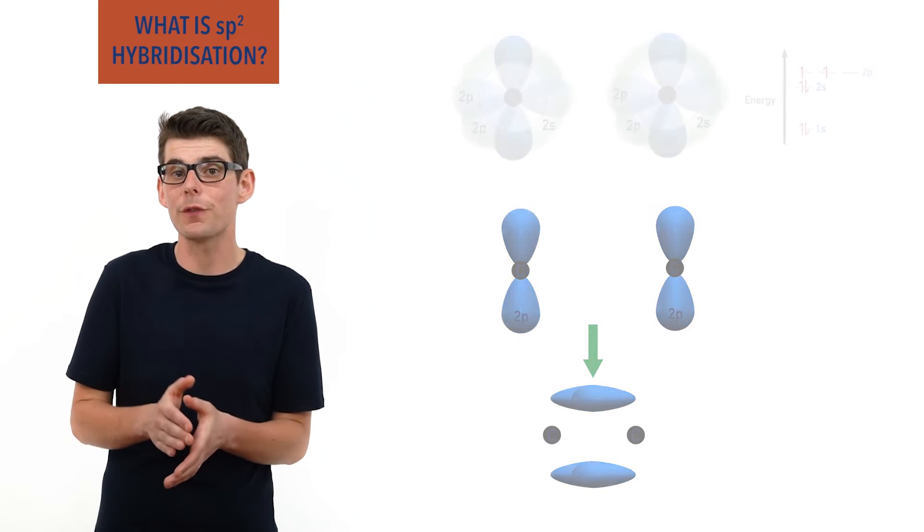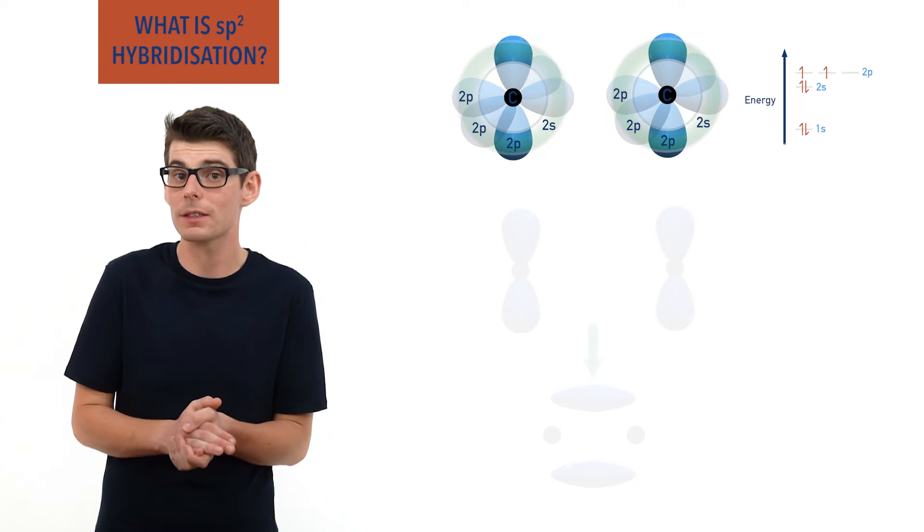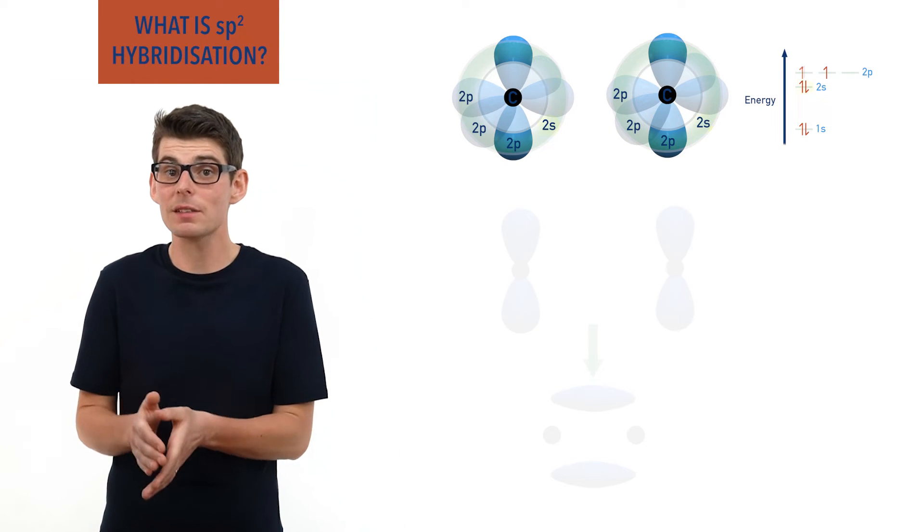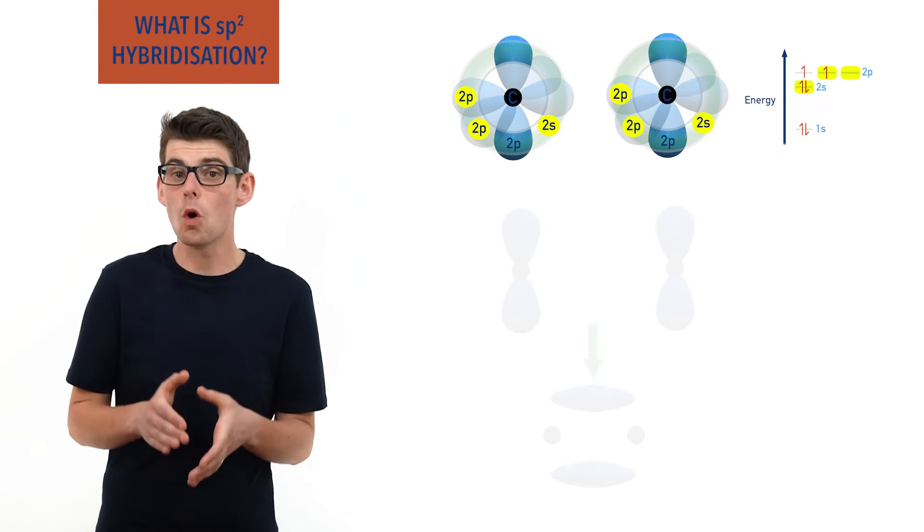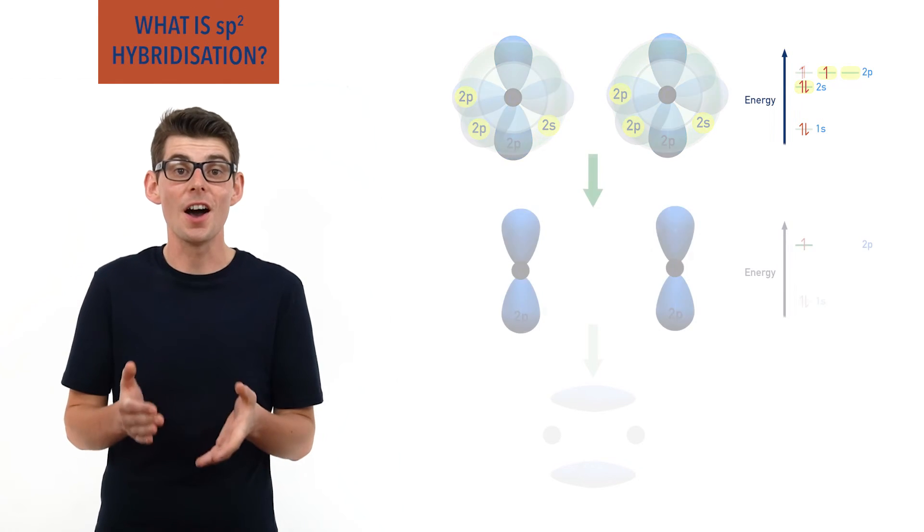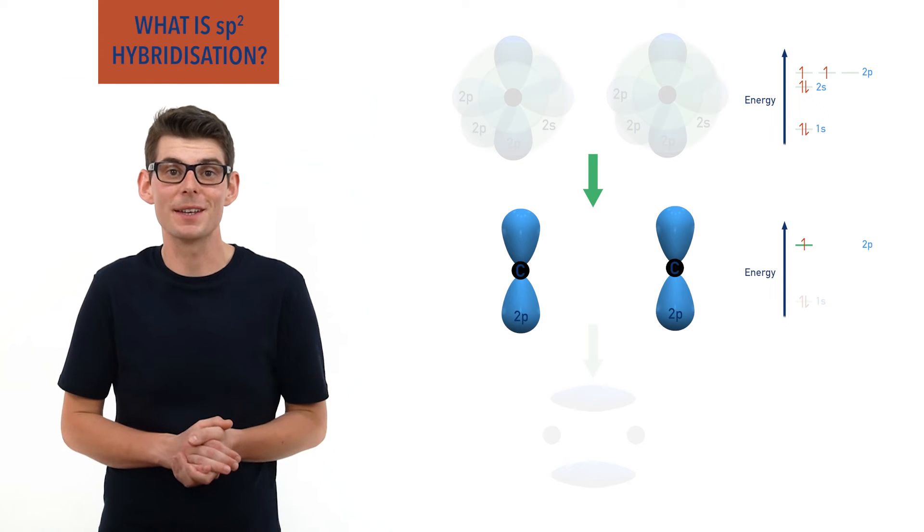only three of the four outer orbitals of the carbon atoms can hybridize—the 2s and two of the 2p orbitals—leaving one of the half-filled p orbitals unhybridized and free to make a pi bond.